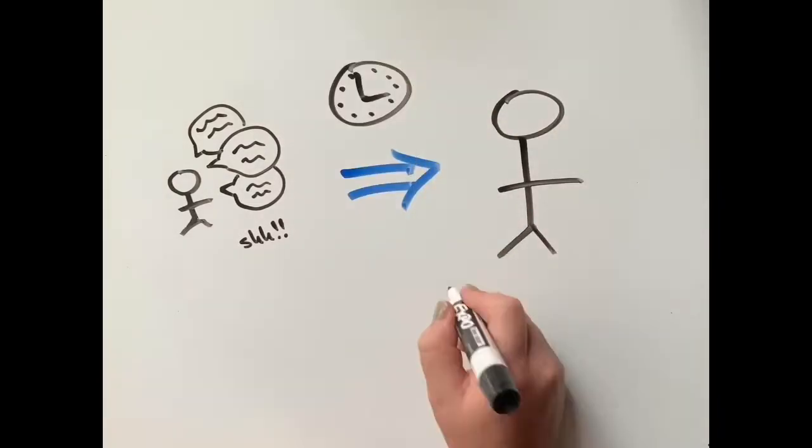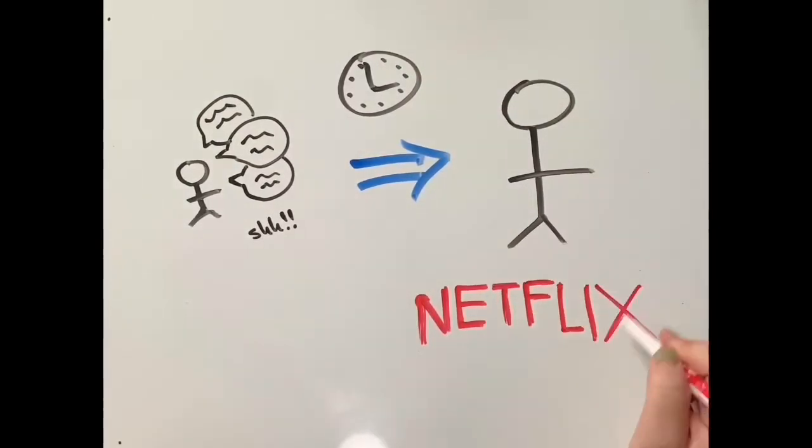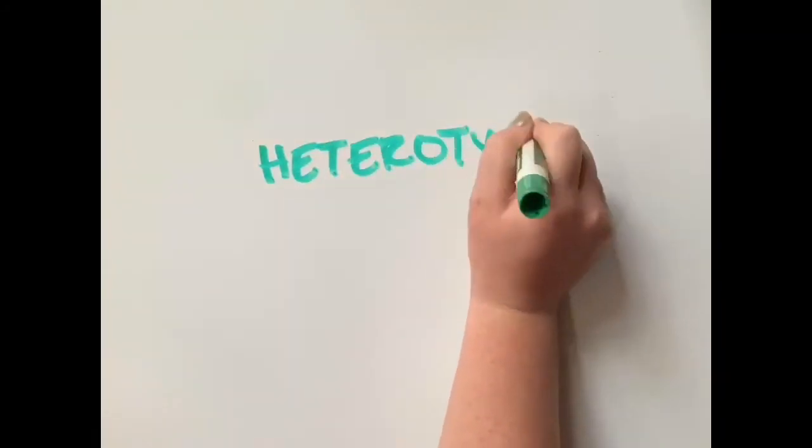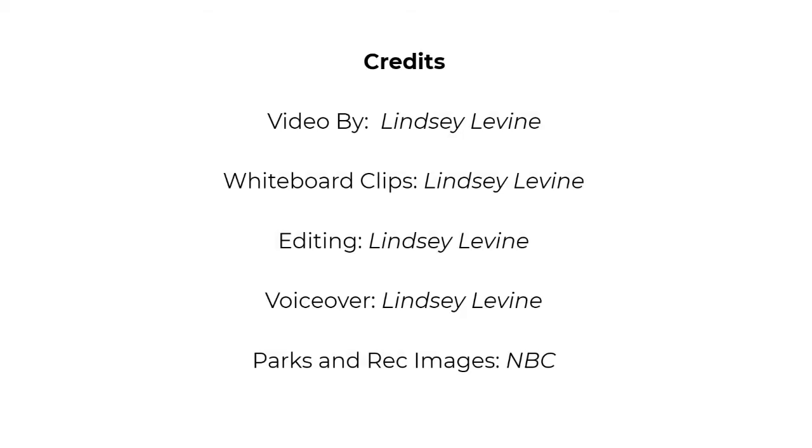In this same person as an adult, lack of self-control may involve drinking too much or watching too much TV. This lack of self-control, expressed differently across life, is an example of heterotypic stability.